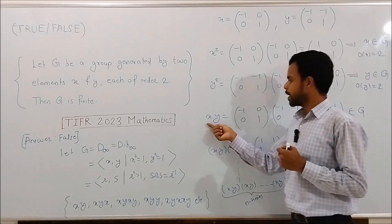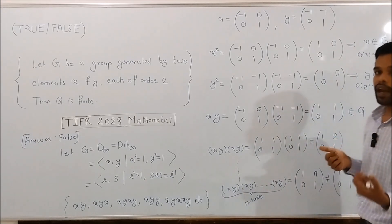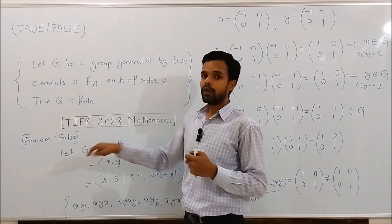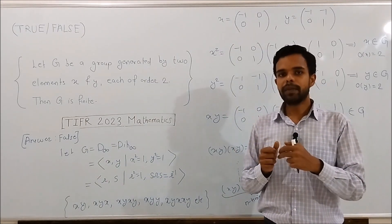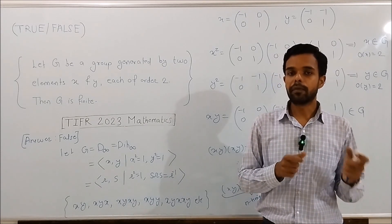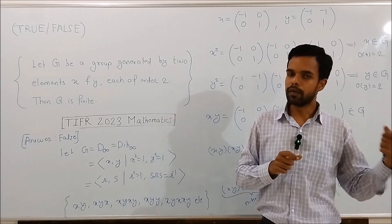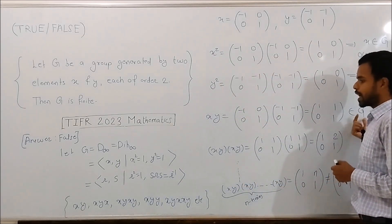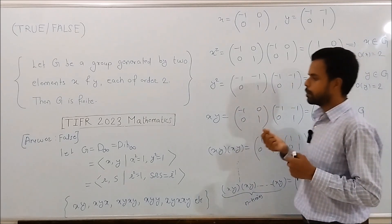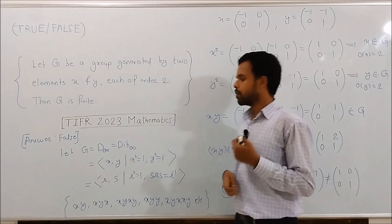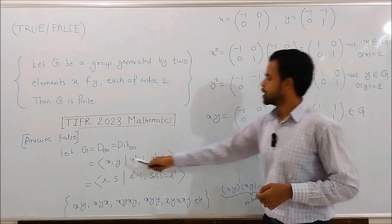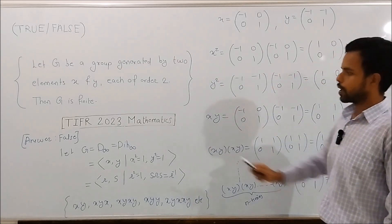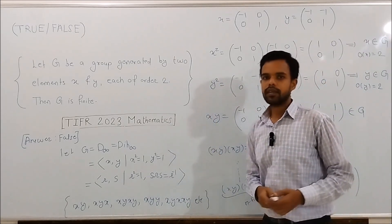Thus, we have found an element of group G which has infinite order. This implies the group G must be of infinite order, because if a group is finite, then all elements of the group must have finite order, since the order of an element divides the order of the group. Here, as we have found an element of G with infinite order, the order of G must be infinite. So we have found an infinite group G which is generated by two elements x and y, each of order 2. Therefore the given statement must be false. Thank you for watching.